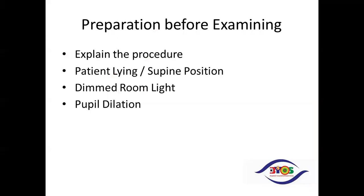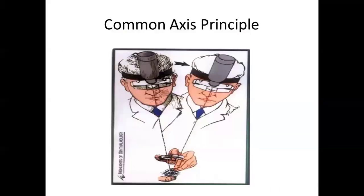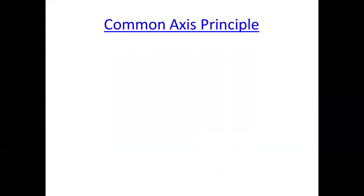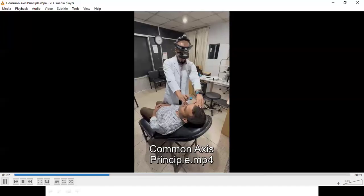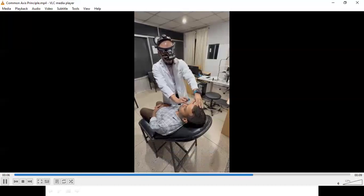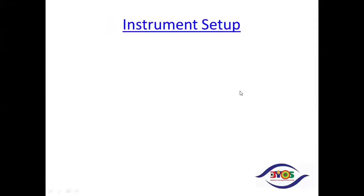Now we will go for the preparation before examining. We will explain the procedure. Patient will be in lying or supine position. We will be using dimmed room light and pupil dilation. The common axis principle - always align the patient's eye and lens.